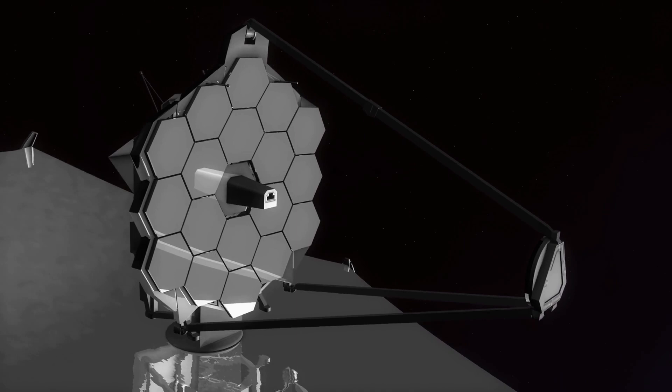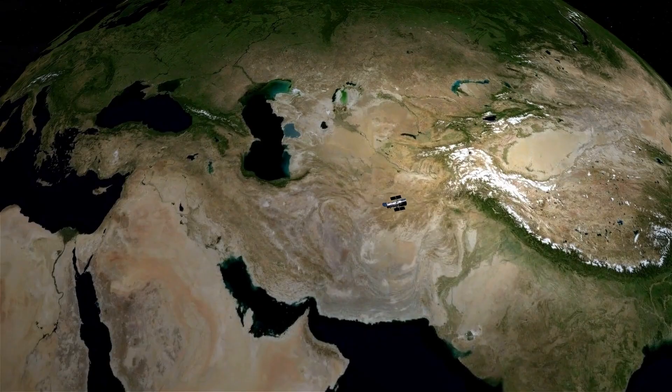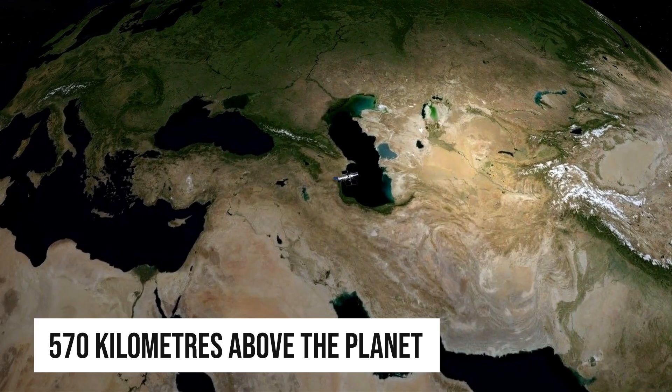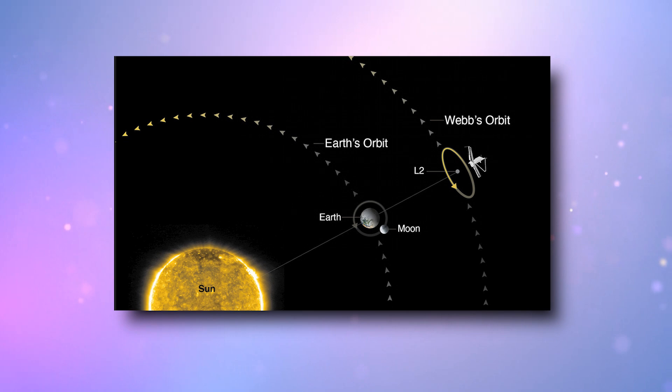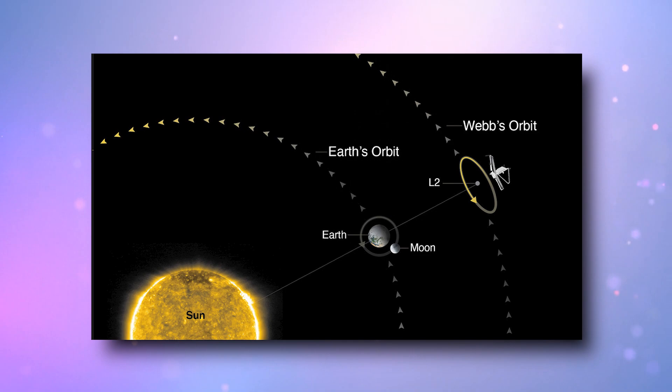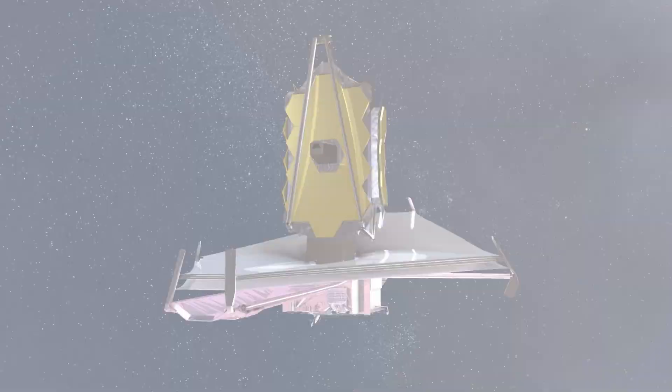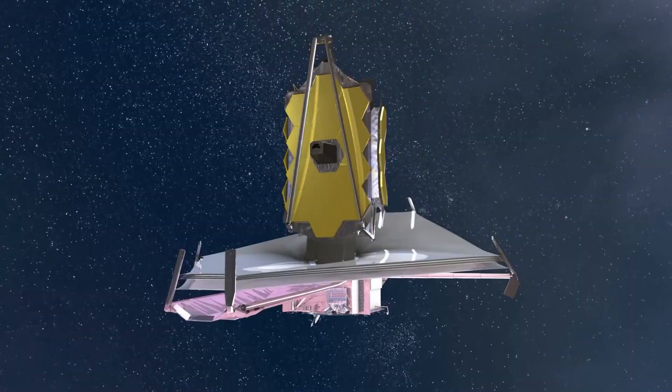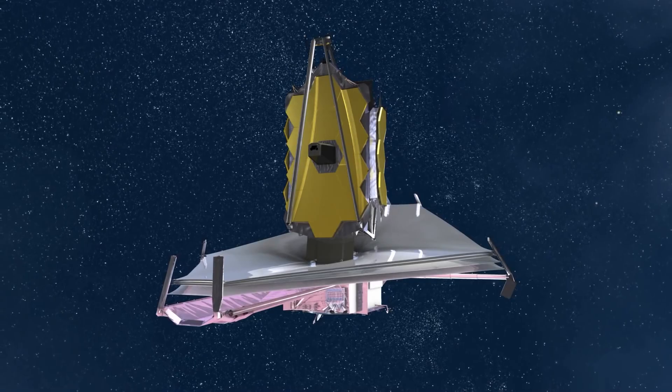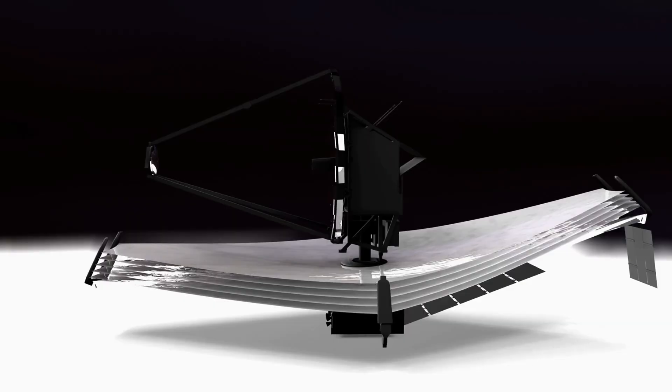The Hubble used to orbit the Earth at an elevation of 570 kilometers above the planet. In stark contrast, the Webb is not orbiting the Earth at all — rather, it's orbiting the Sun. The Webb stays fixed at a certain point, motionless concerning the positions of the Sun and the Earth. Since the Webb has a wide sunshield and functions away from the Earth, its body won't be heated excessively, resulting in greater efficiency and precision compared to Hubble.